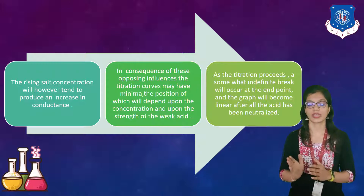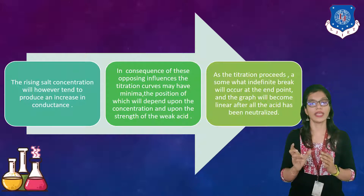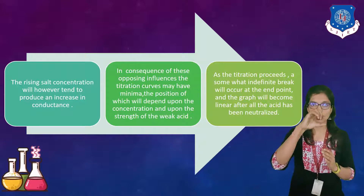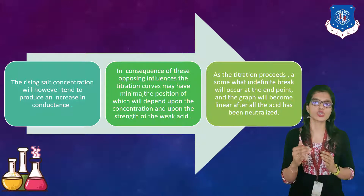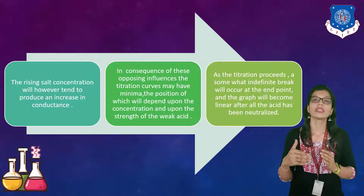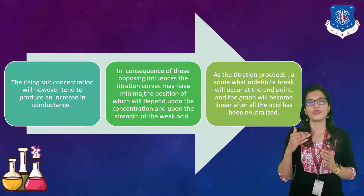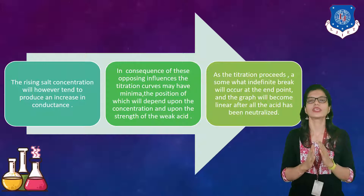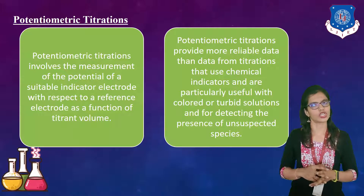As the titration proceeds, a somewhat indefinite end point will occur, and the graph will become linear after all the acid has been utilized. The graph gives us the value of conductance throughout, which shows what kind of titration it is. It shows the nature of the titration, the end point, and the progress of the titration.